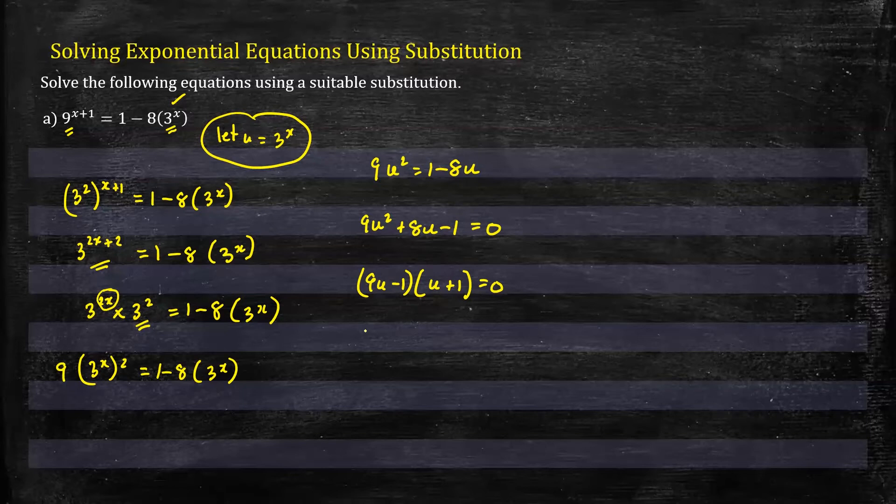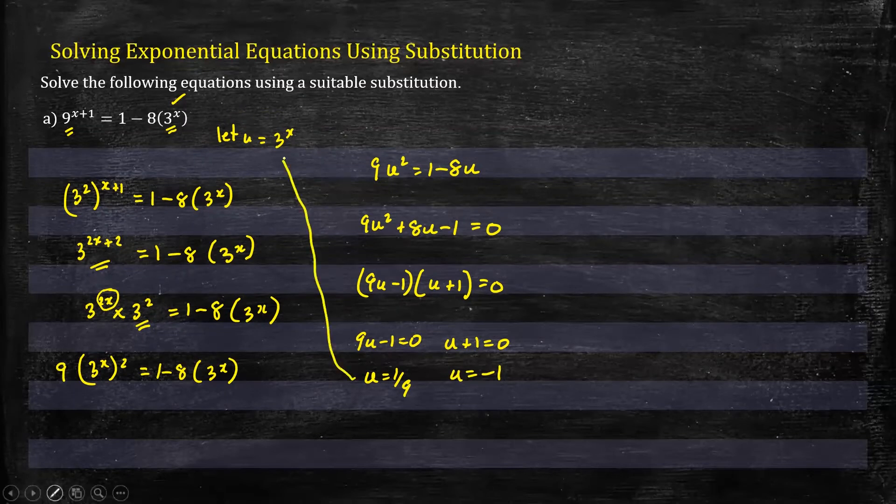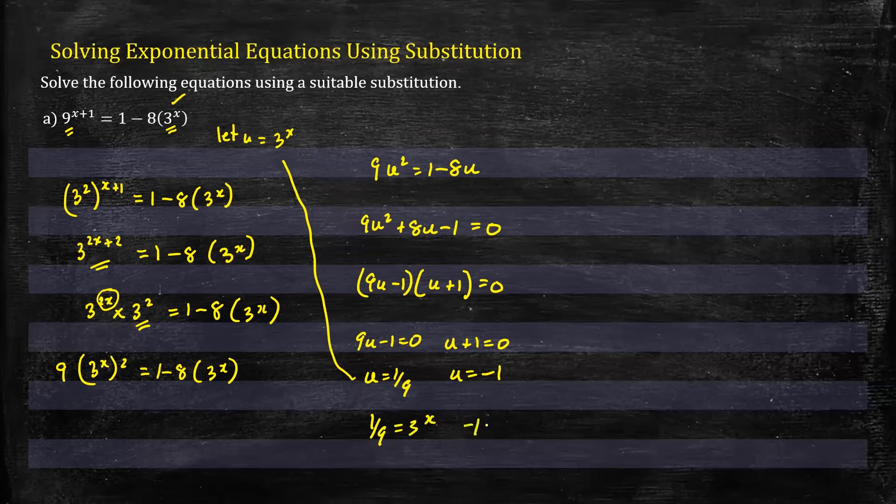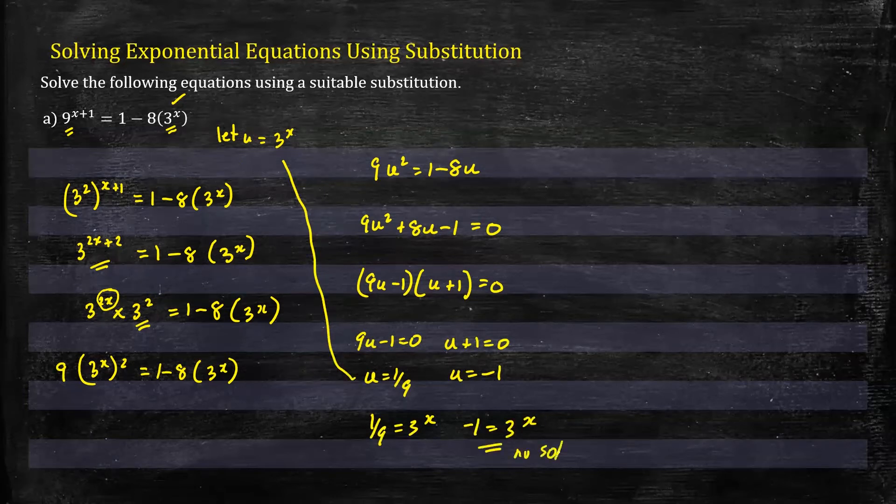Now we'll solve these two factors for u. So we have 9u minus 1 equals 0 and u plus 1 equals 0. On the left side u will equal 1/9, and in this case u will equal negative 1. Now we'll go back to our original statement where we said that u equals 3 to the power x. So now we can say that 1/9 equals 3^x and negative 1 equals 3^x. Now this on the right side has no solution. There's no real number value of x that will equal negative 1 on this side.